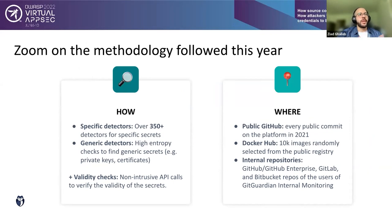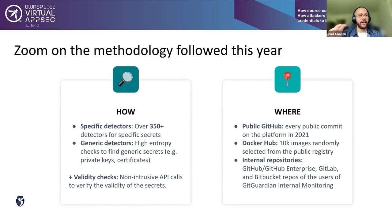We used two types of detectors: specific detectors that look for known service credential types such as AWS keys and Stripe keys, and generic detectors that perform high-entropy checks to find generic secrets like private keys and certificates that can't be tied to an external service. We also perform non-intrusive API calls to verify the validity of detected secrets before considering them true positives.